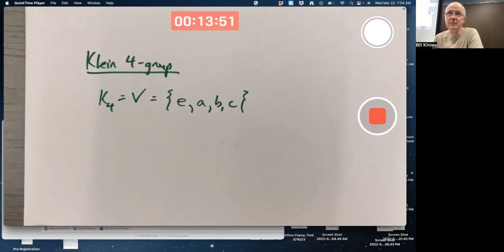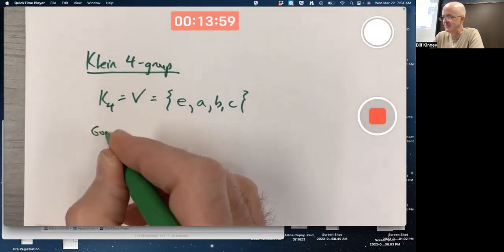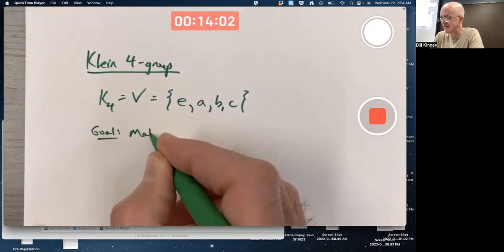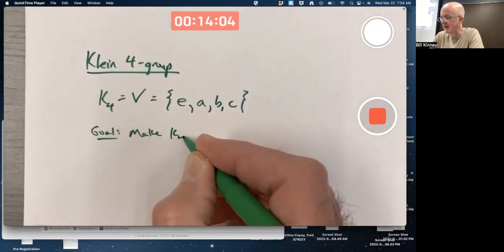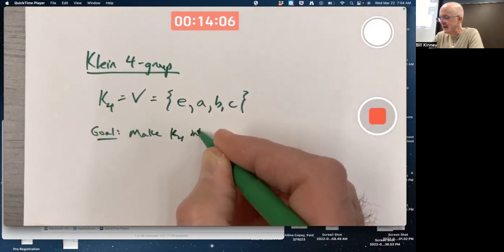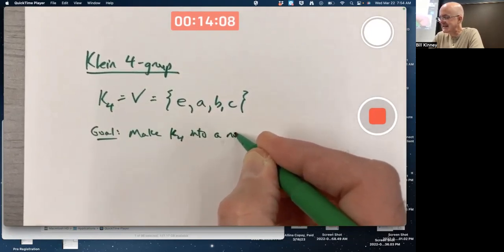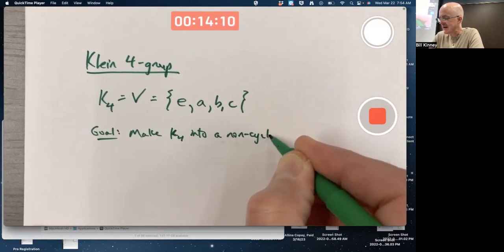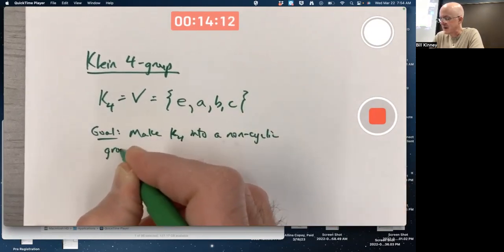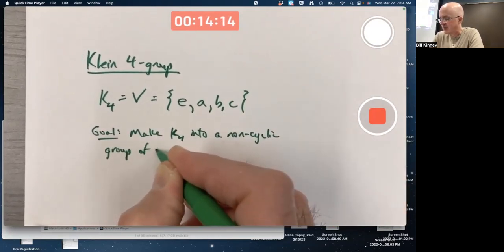Is it going to be a cyclic group of order four? No, I'm purposely trying to construct it to be a non-cyclic group of order four. Goal is to make K4 into a non-cyclic group of order four.